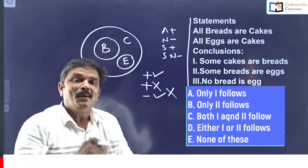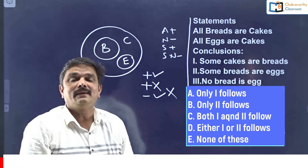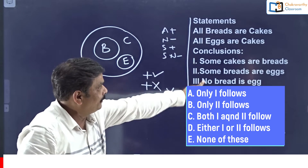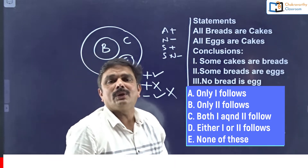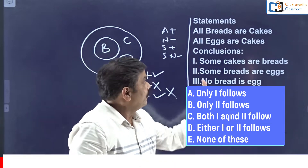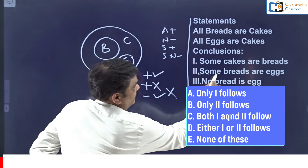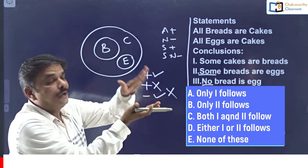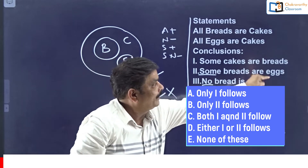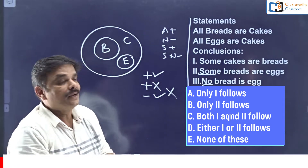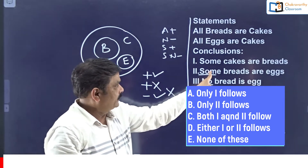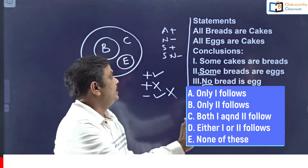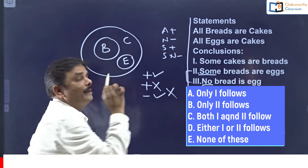Before giving the final answer, you need to check whether there is any complementary pair in the conclusions. There is a complementary pair here. Some and No are complementary, and the subject and predicate - bread, egg and bread, egg - match. Yes, these two form a complementary pair.